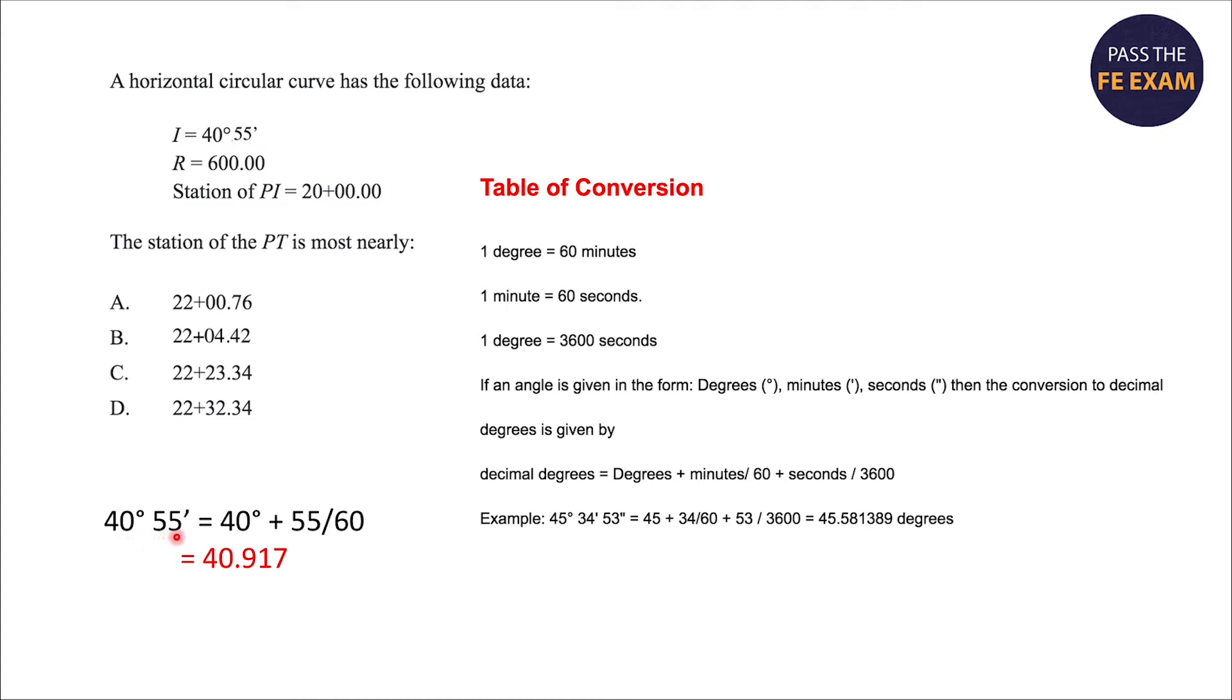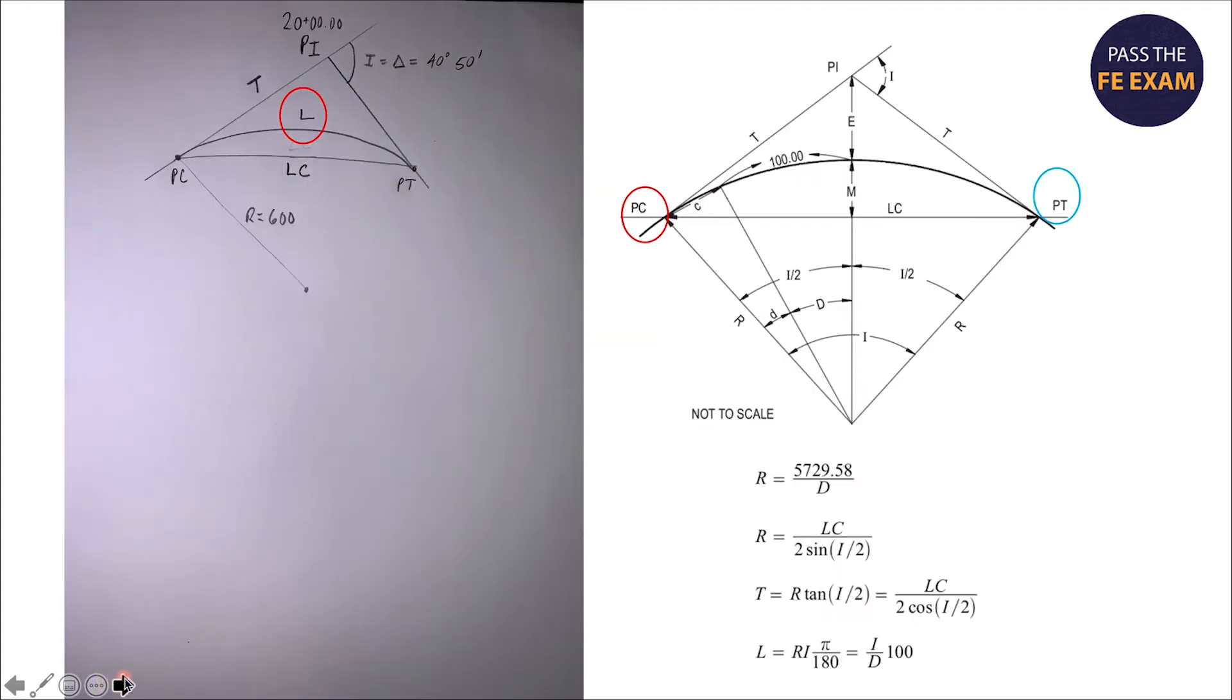We have 40 degrees, 55 minutes, which will equal 40 plus 55 over 60, or 40.917. In all of our calculations, we're going to use this number whenever we need the delta or the I.